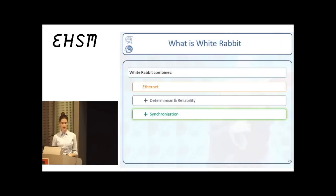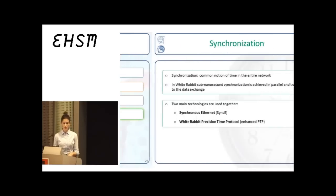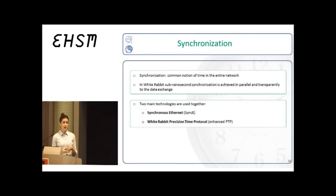Let's finish now with the synchronization part. So, synchronization is having a common notion of time in the entire network. And White Rabbit provides sub-nanosecond levels in parallel and transparently to the data exchange. There are two main technologies used together, Synchronous Ethernet and the White Rabbit Precision Time Protocol. And I will give an overview of each one of them right now.